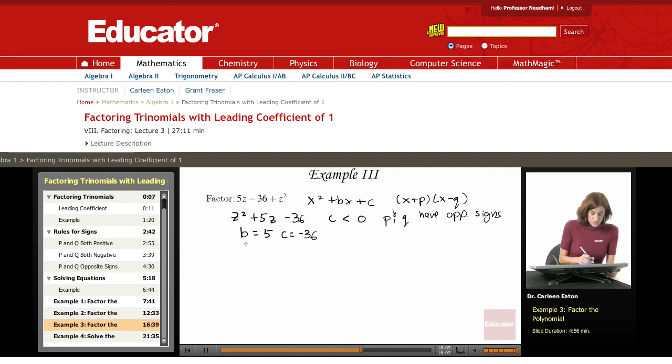Okay, I'm remembering my rules that p times q equals c, and here it equals negative 36. And my other rule, p plus q equals b, which equals 5. So now I have to make my list.